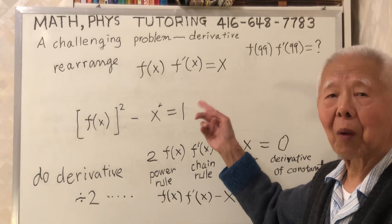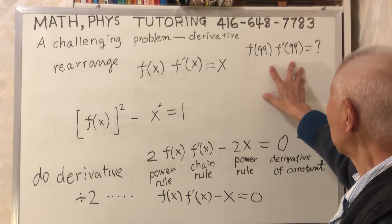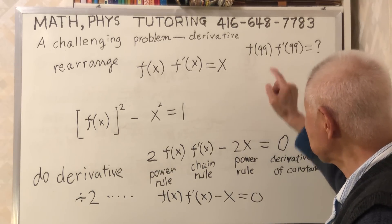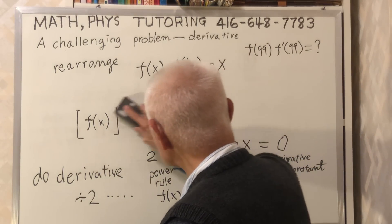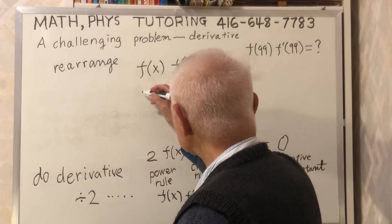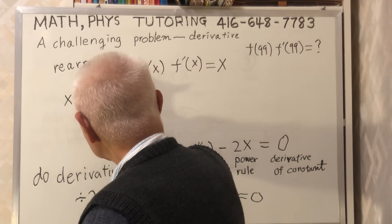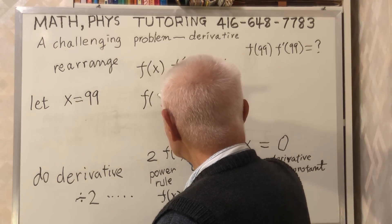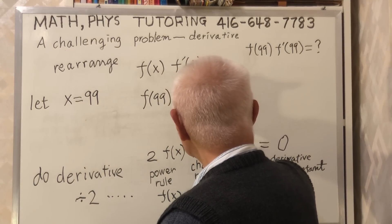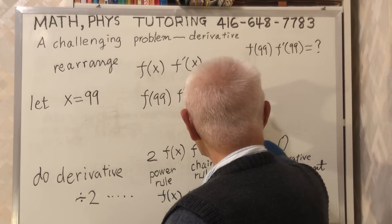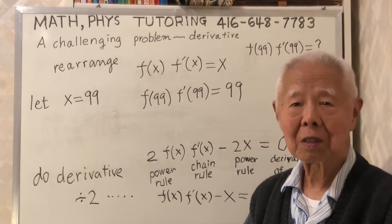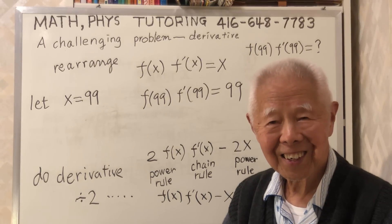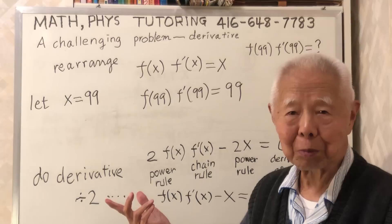Rearranging, I have f(x) times f'(x). Moving x from the left to the right gives me f(x) times f'(x) equals x. It is almost our answer. I just replace x by 99, so f(99) times f'(99) equals 99. This problem is very tricky — the answer is 99.